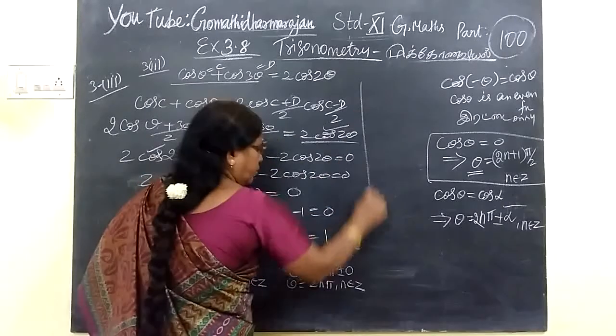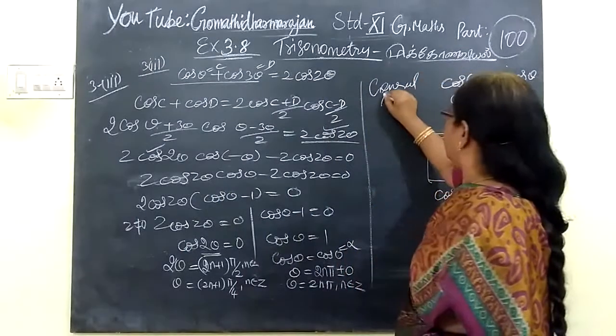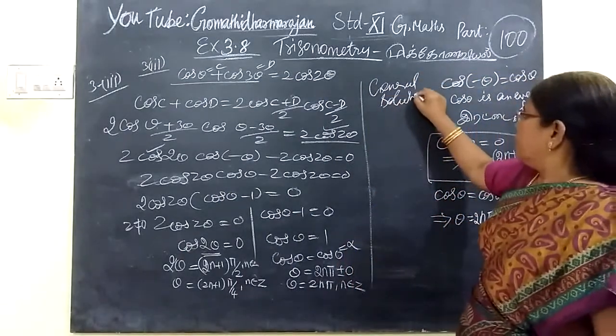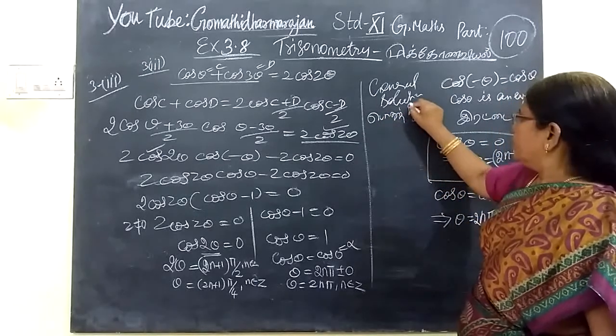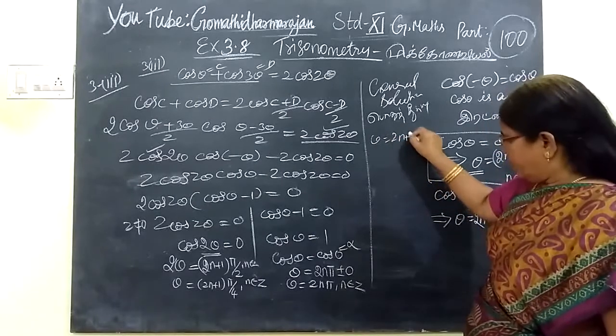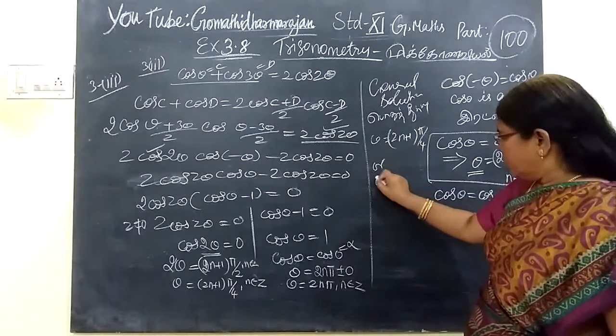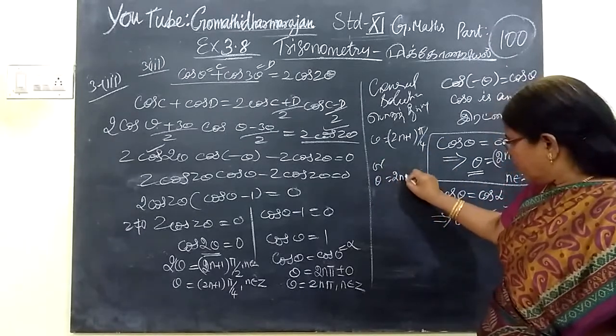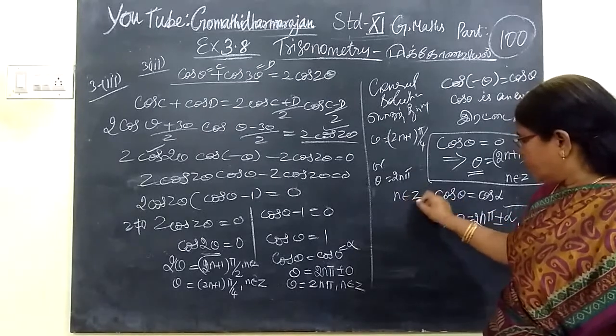So what is the general solution? Therefore, general solution: θ equals 2nπ or θ equals (2n plus 1)π/4, where n belongs to integers.